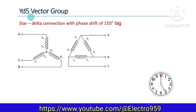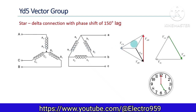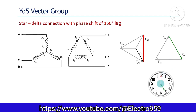Next we consider the YD5 vector group. The primary is star connected and the secondary is delta connected. In the phasor diagram, line voltages on the star-connected primary side are decomposed into corresponding phase voltages. Taking line voltage VAB as the primary side reference, we need to take VAB for the secondary side also. Here VAB comes from winding B of the secondary, and the voltage induced in it will be in phase with the phase voltage of winding B on the primary. The secondary line voltage is lagging by 150 degrees from the corresponding primary voltage — represented by the 5 o'clock hand position. The simplified connection diagram and displacement diagram are shown.